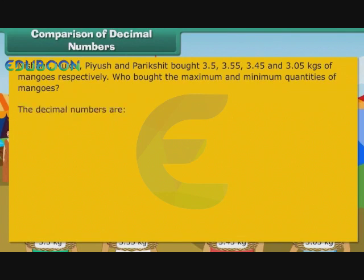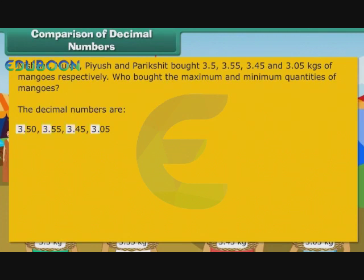The decimal numbers are 3.5, 3.55, 3.45, and 3.05. Let us rewrite the numbers so that all have the same number of digits after the decimal point: 3.50, 3.55, 3.45, 3.05. All the numbers have 3 to the left of the decimal point. Therefore, we arrange them on the basis of the digits after the decimal point.